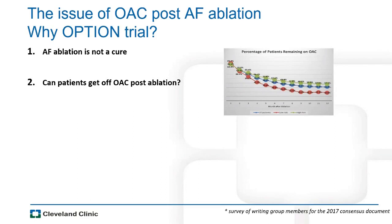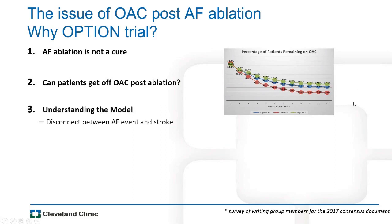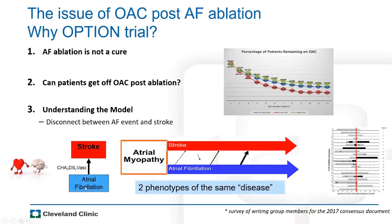There is a paradigm shift in understanding: it may not be that AF directly causes stroke, but rather that an atrial myopathy predisposes patients to both stroke and atrial fibrillation. The presence of AF increases stroke risk, but ongoing AF is not required for high stroke risk. These may be two phenotypes of the same disease — meaning even if you eliminate the AF, you may not significantly reduce stroke risk, and some form of protection is still needed.